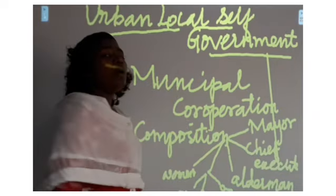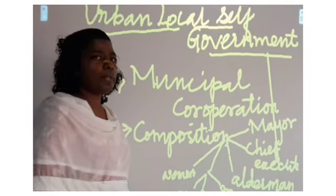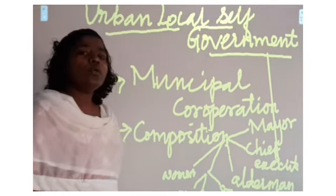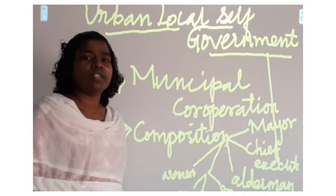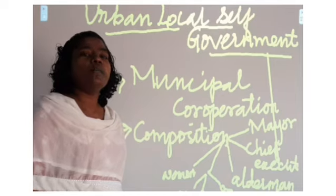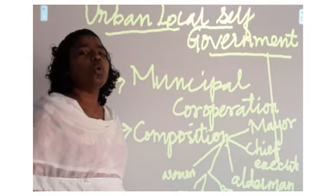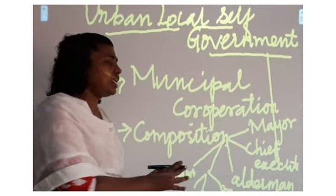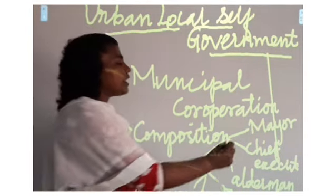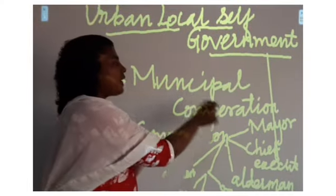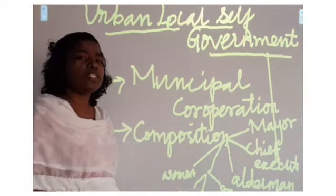The members of the municipal corporation are elected by the adult members of the city. In India we follow the universal adult franchise — all adults who have completed the age of 18 have the right to vote. The adult members from the particular city elect the members of the municipal corporation. The term period of members of the municipal corporation is 5 years.